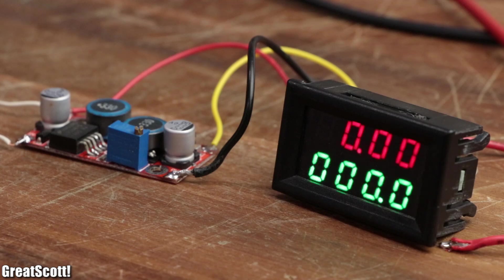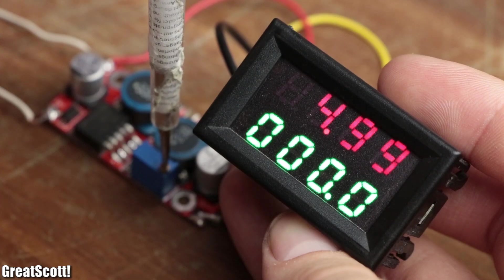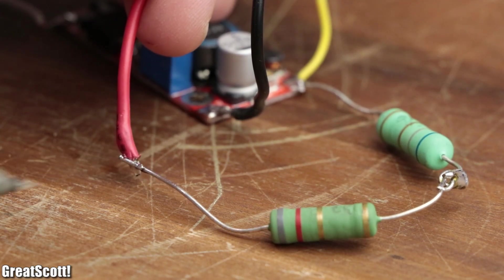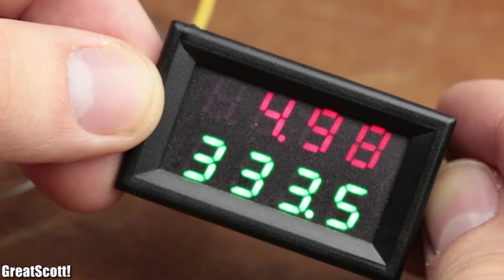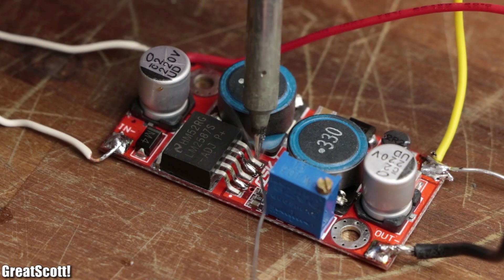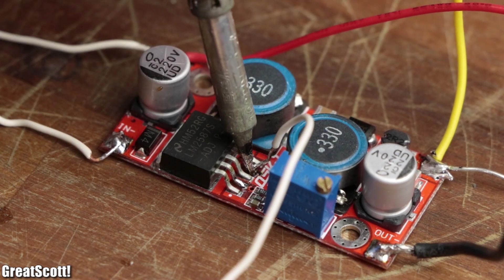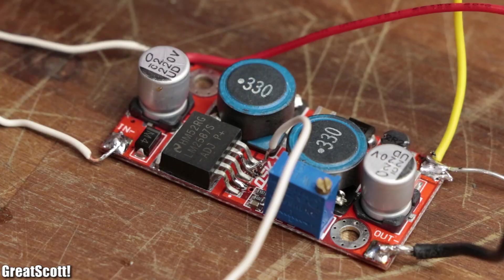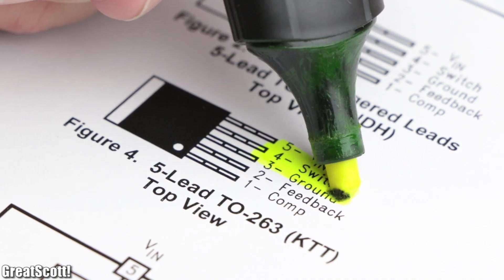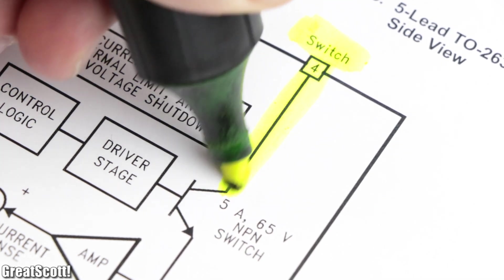Now let's fire up the converter, adjust its output voltage to 5V, and connect a 15.2 Ohm load which lets a current of 333mA flow. To observe how the BJT inside the IC switches, we can simply solder a wire to its pin 4, and hook it up to the oscilloscope, since that is the switch pin which directly connects to the collector of the BJT.